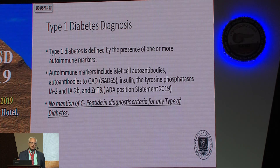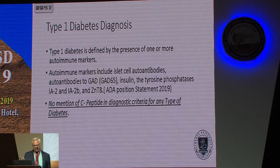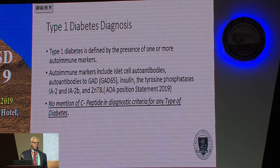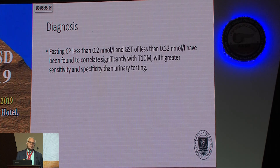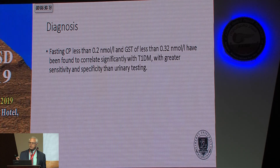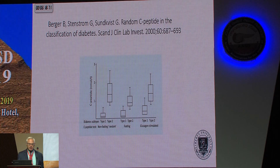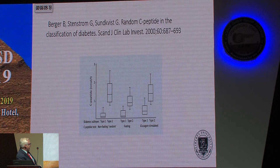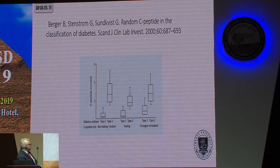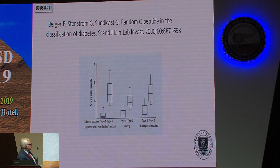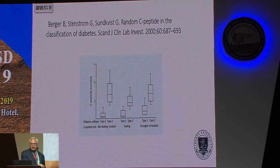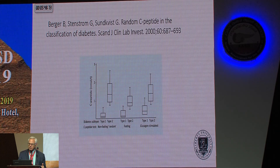Type 1 diabetes is an autoimmune disease and you have to have autoimmune antibodies — C-peptide levels are not mentioned at all in the diagnosis of type 1 diabetes. However, C-peptide levels are low in patients with type 1, and a value of 0.2 nanomoles per liter or less than 0.32 on a stimulated value has been correlated with a clinical diagnosis of type 1. Studies show random C-peptide level was the best test differentiating type 1 from type 2, with a significant difference between groups. So a low C-peptide won't make the diagnosis, but it can indicate whether a person will need insulin sooner versus later.